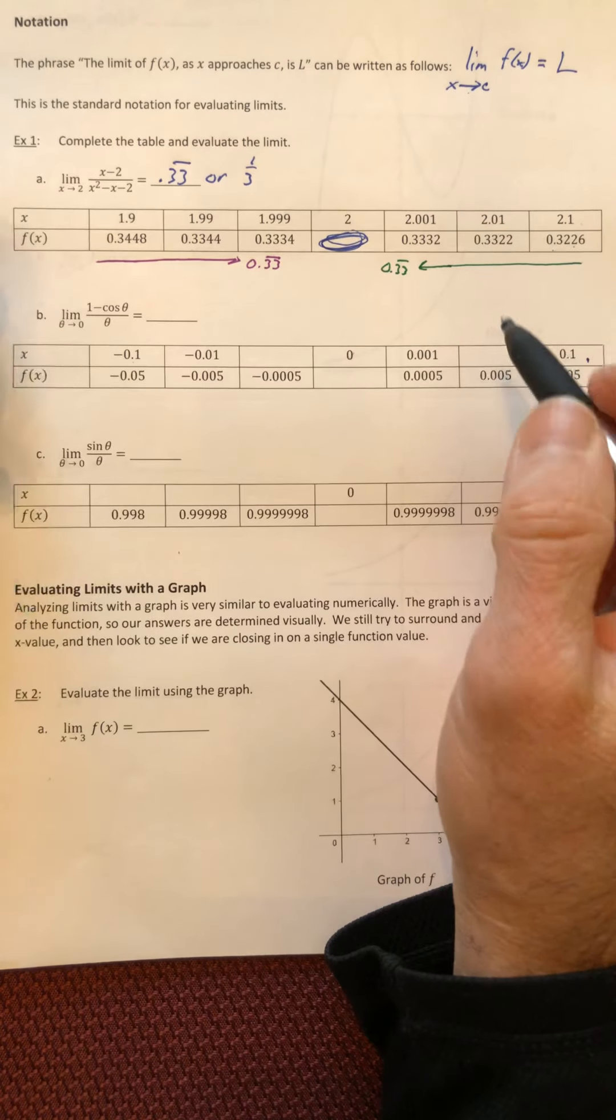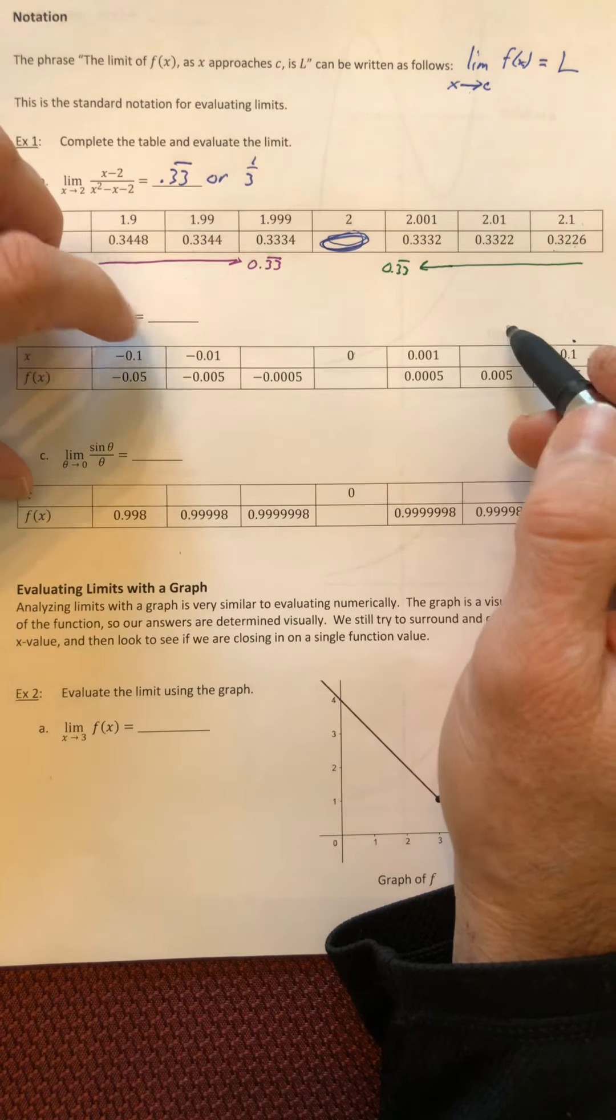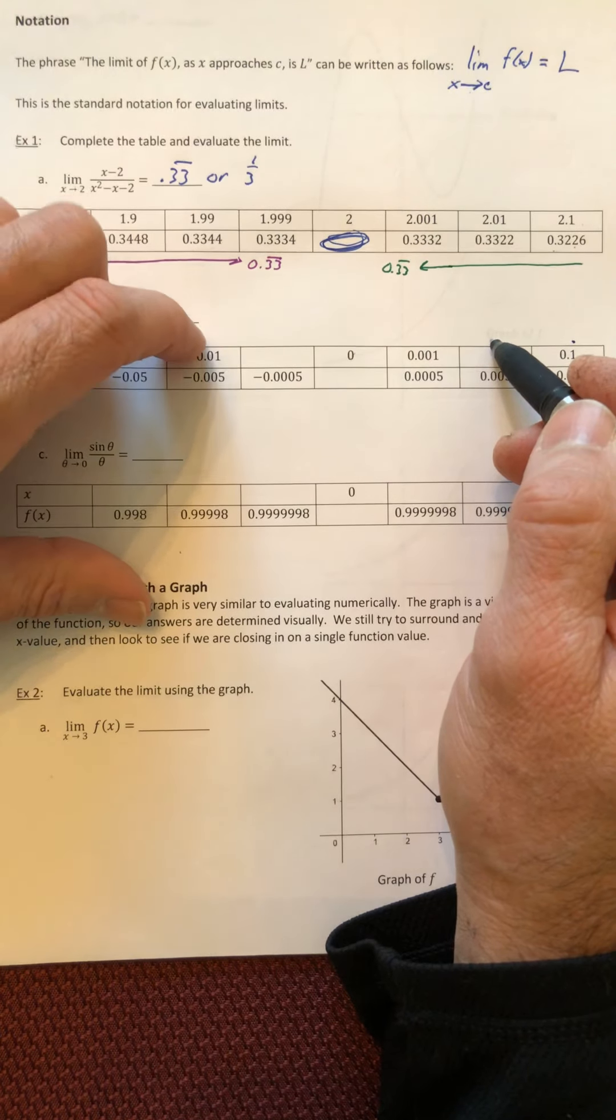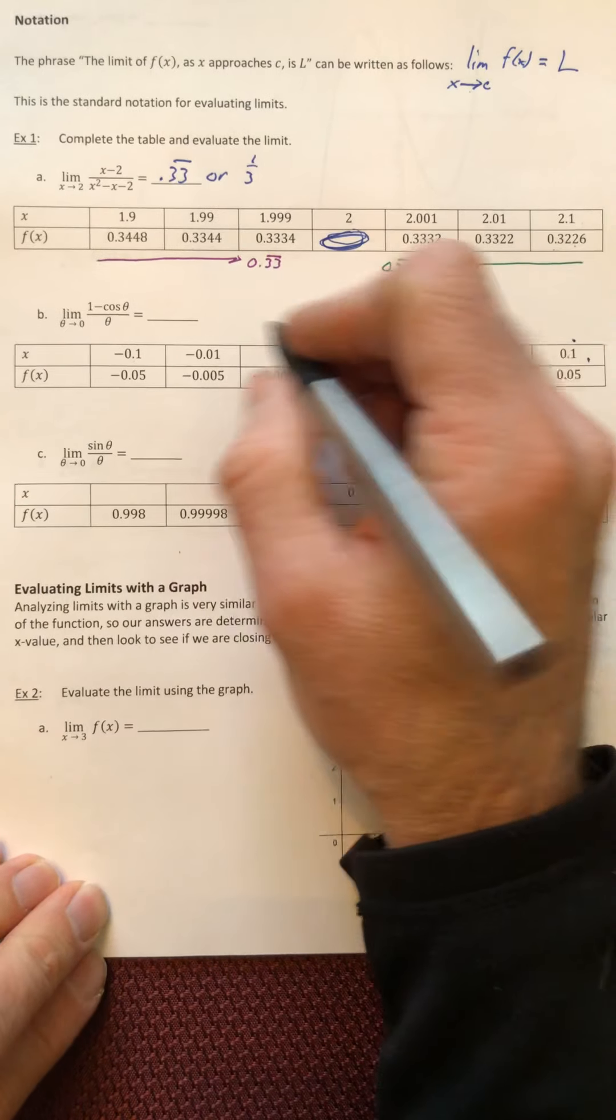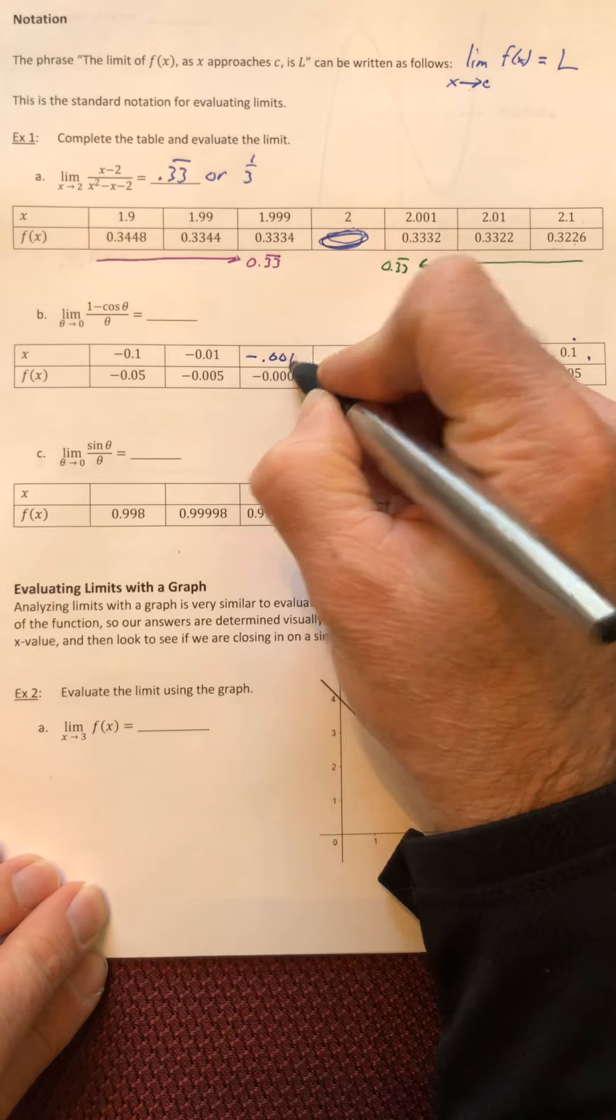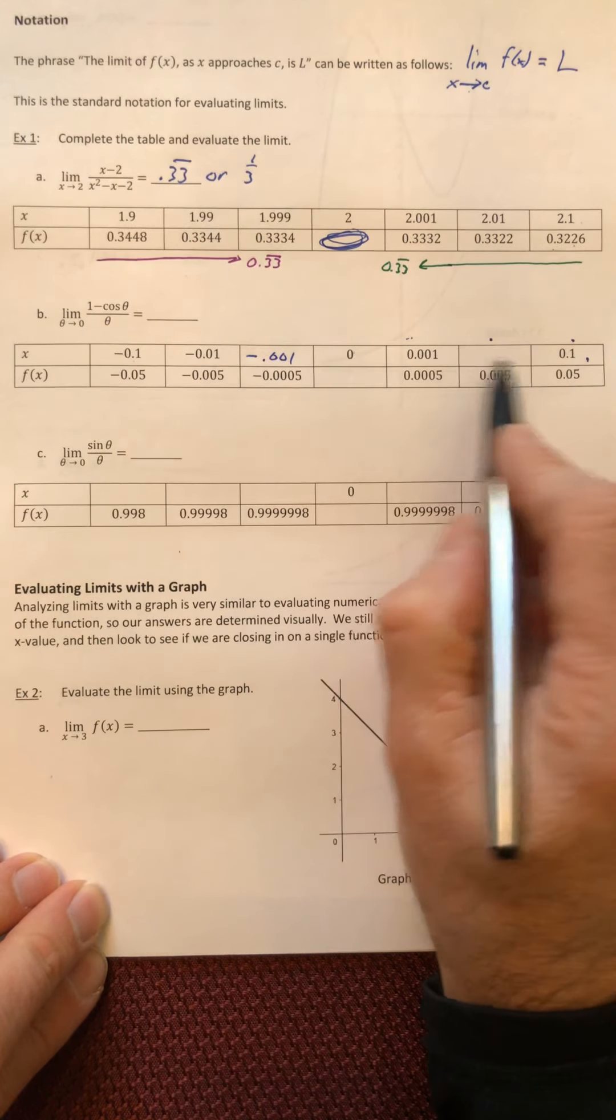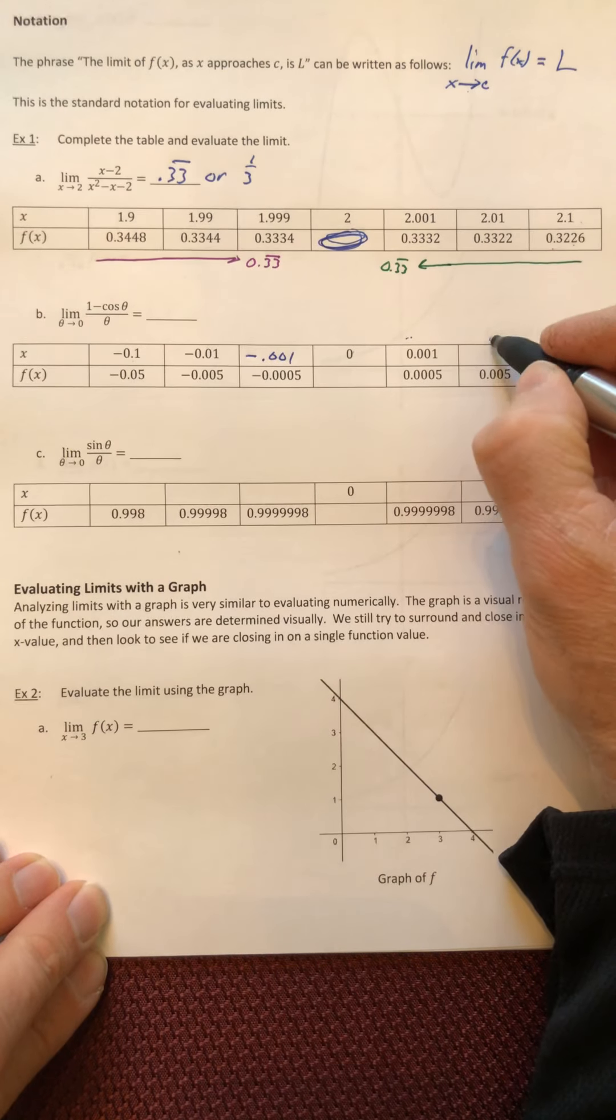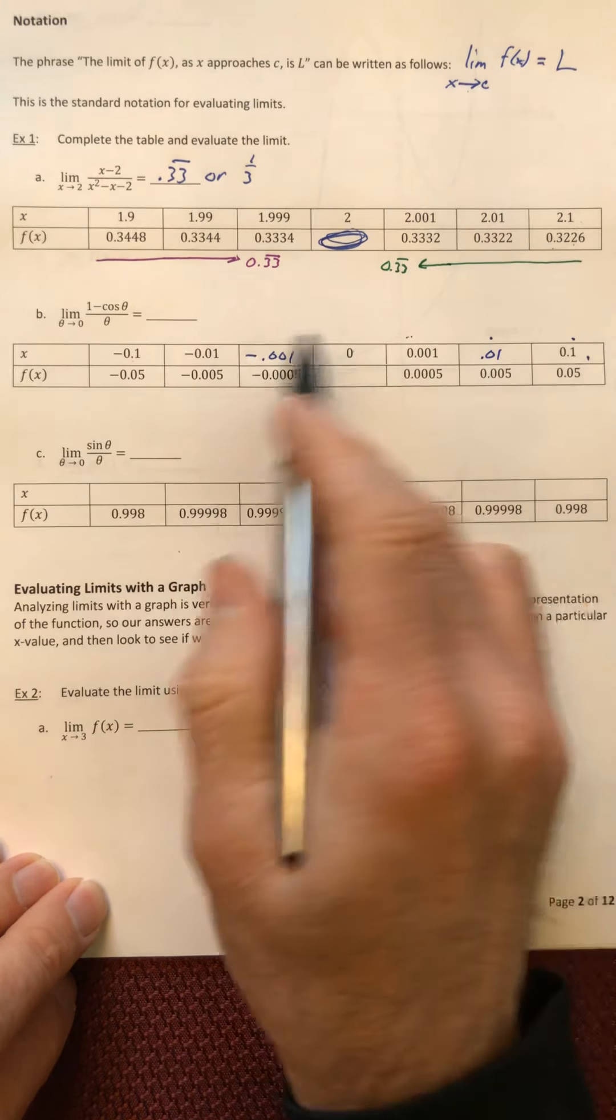So you're off by 0.1, then you're off by 0.01, then you're off by 0.001. So since I don't have this one, that's the one where I'm off by 0.001. Here I'm missing this middle one, so that's the one that's off by 0.01. And now you've completed the table.